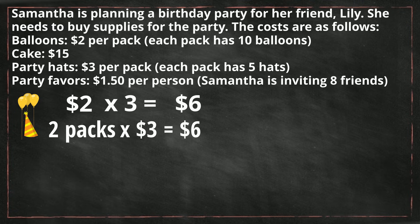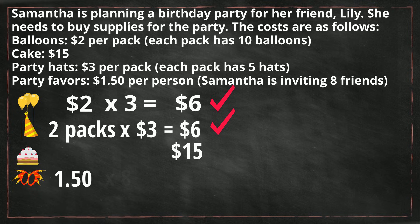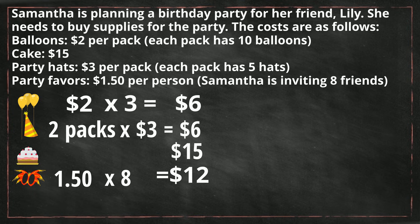Now let's get the total cost for all of the party supplies. Balloons: $6. Party hats: $6. The cake: $15. Each party favor is $1.50 and we have eight people coming, so 8 times $1.50 equals $12 for party favors. Adding it all up — $6 for balloons, $6 for hats, $15 for the cake, and $12 for the party favors — you get a grand total for hosting this party of $39.